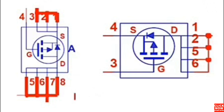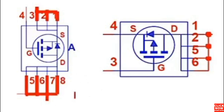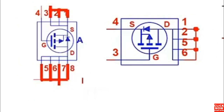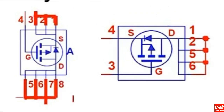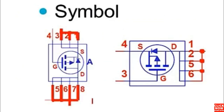Here we have the schematic of the 8-pin MOSFET. It contains 8 pins. The first pin is always indicated with a white dot as you can see here. This is the first pin, followed by the second, third, fourth, and so on. Pins 1, 2, and 3 are sources, pin 4 is the gate, and pins 5, 6, 7, and 8 are drains, as shown in the circuit.